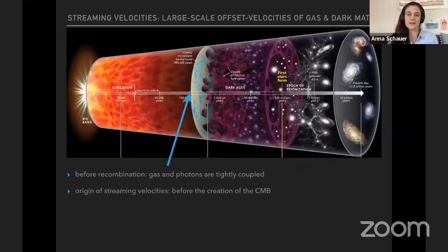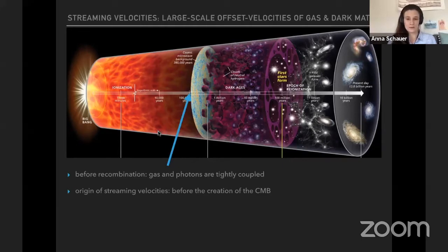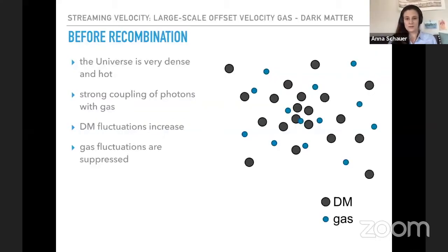For studying the really early universe, we need to go back a little bit. And I need to talk about an effect that's very important for the first stars. And that dates back to before recombination. Those are the so-called streaming velocities. So at those very, very early times in the universe, the universe is very dense and very hot. So we have this coupling of our photons to the gas. On the right, I'll show you a cartoonish picture on a very large scale.